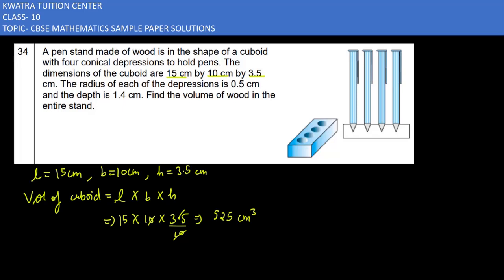Next, you have to get minus volume of cone. Volume of one cone, not four cones, but we will find volume of one cone first. That is 1/3 π r² h. 1/3 as it is, π value 22/7, r is 0.5.